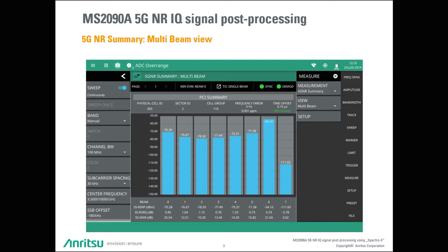One can assume that the measurement location is also very close to beam number one. This assumption is supported by a good power level of around minus 70 dBm and again an SINR that is with 25 dB even superior.